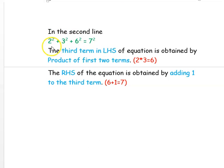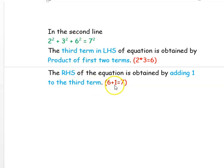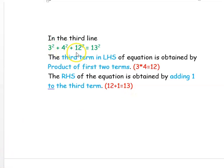In the second line, it is given 2² + 3² + 6² = 7². The third term, 6, is obtained by the multiplication of the first two numbers: 2 × 3 = 6. The right-hand side is obtained by adding 1 to this third term: 6 + 1 = 7. In the third line, 3² + 4² + 12² = 13². The third term is 3 × 4 = 12, and the right-hand side is 12 + 1 = 13.